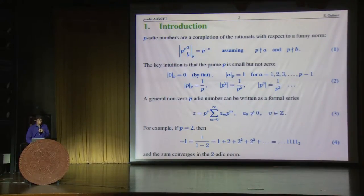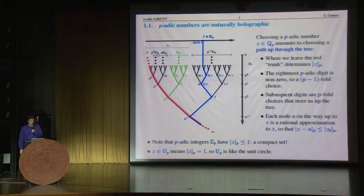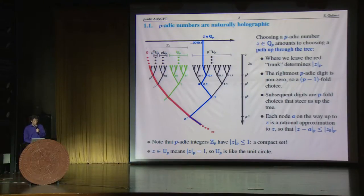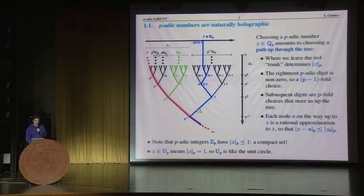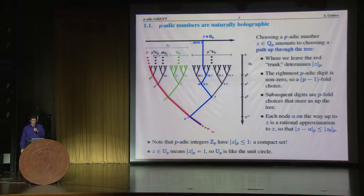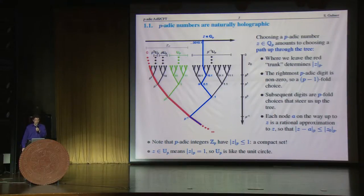Let me draw this p-adic expansion in a way that will be, I hope, very suggestive of AdS-CFT. I want to have a tree whose main trunk starts at infinity and goes all the way up to 0. I want to consider paths on this tree which start at infinity and go upward toward the boundary of the tree in some particular way. The way in which I steer up through the tree will uniquely determine a p-adic number, because it amounts to specifying the expansion that I wrote on the previous page.